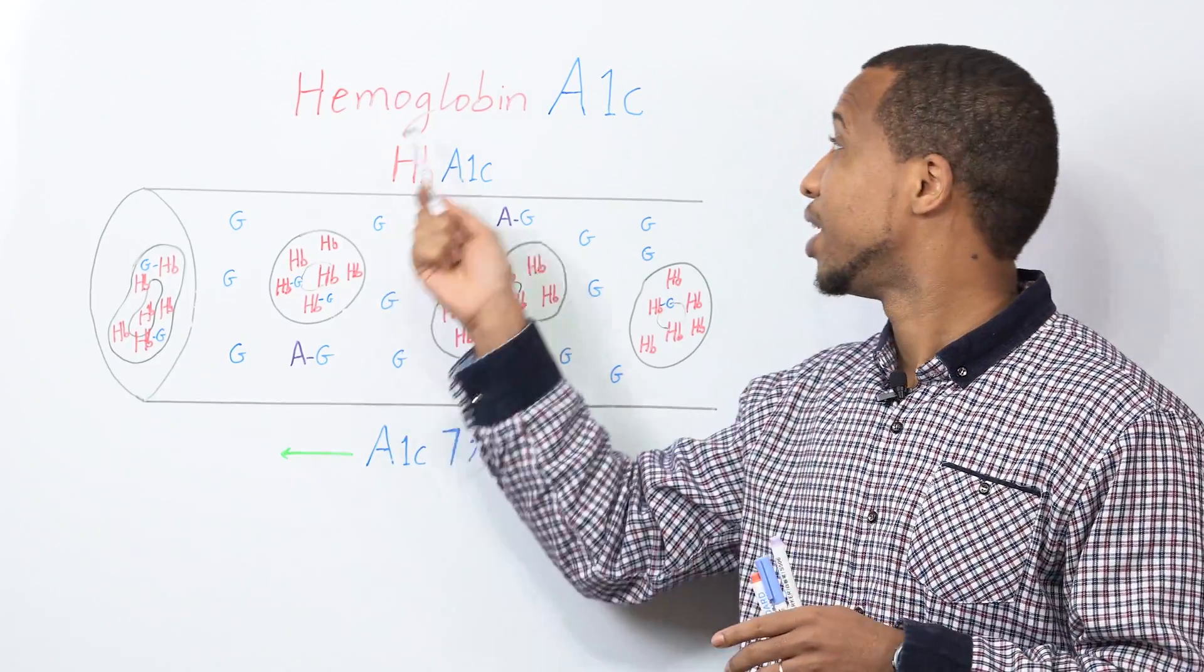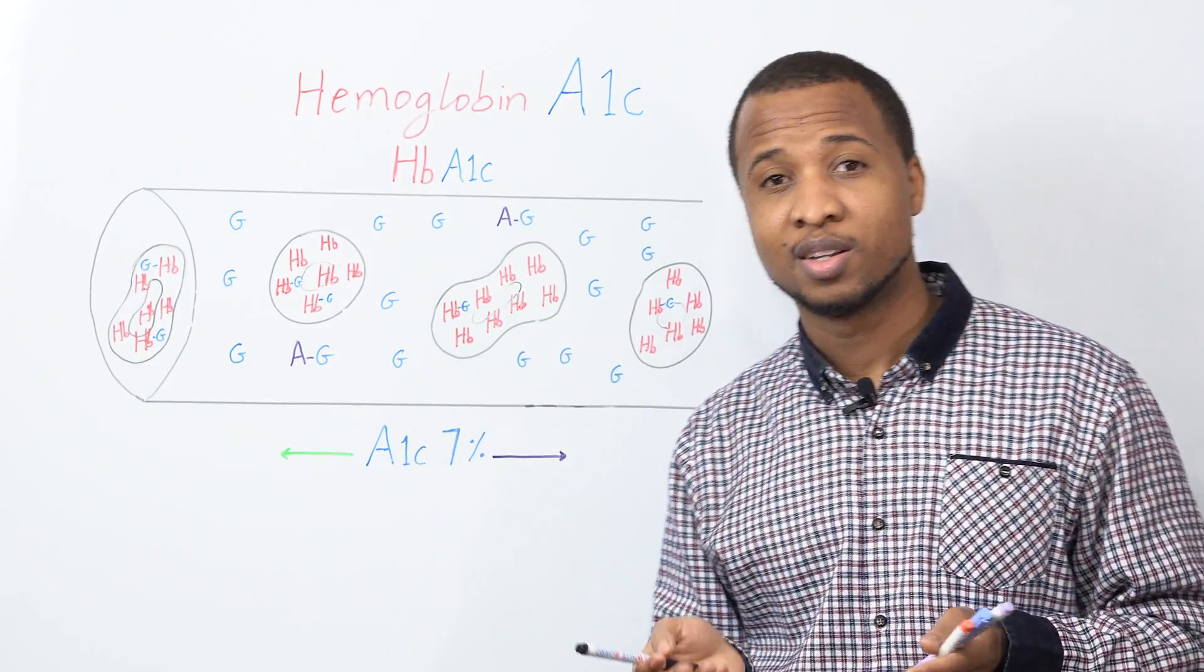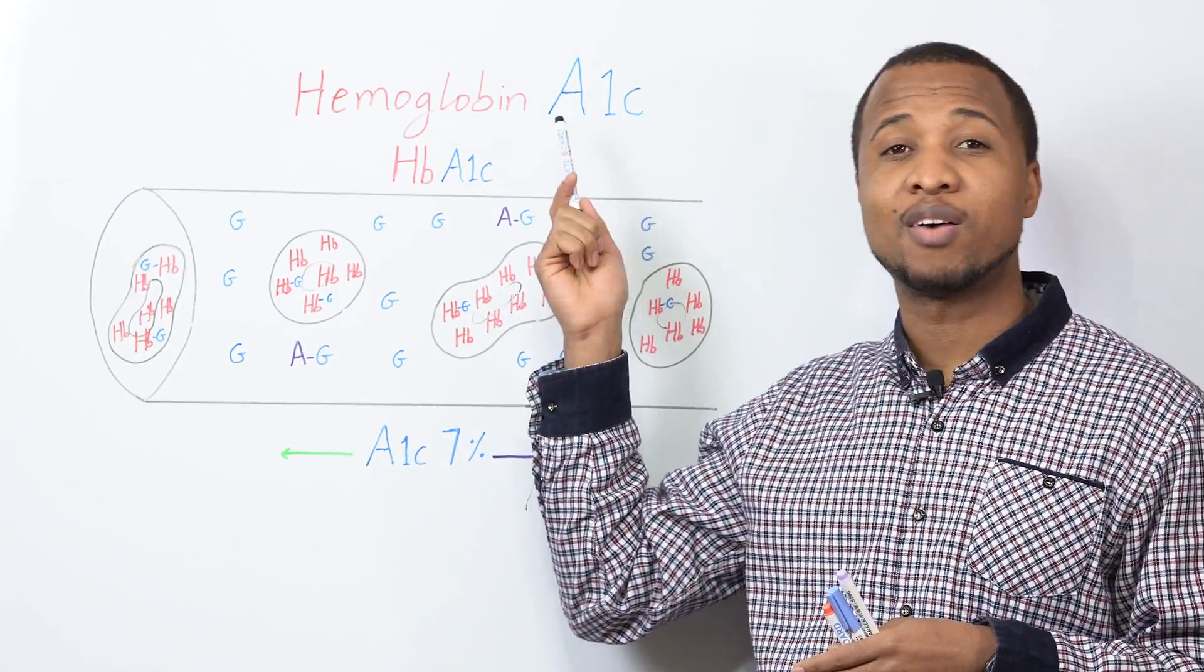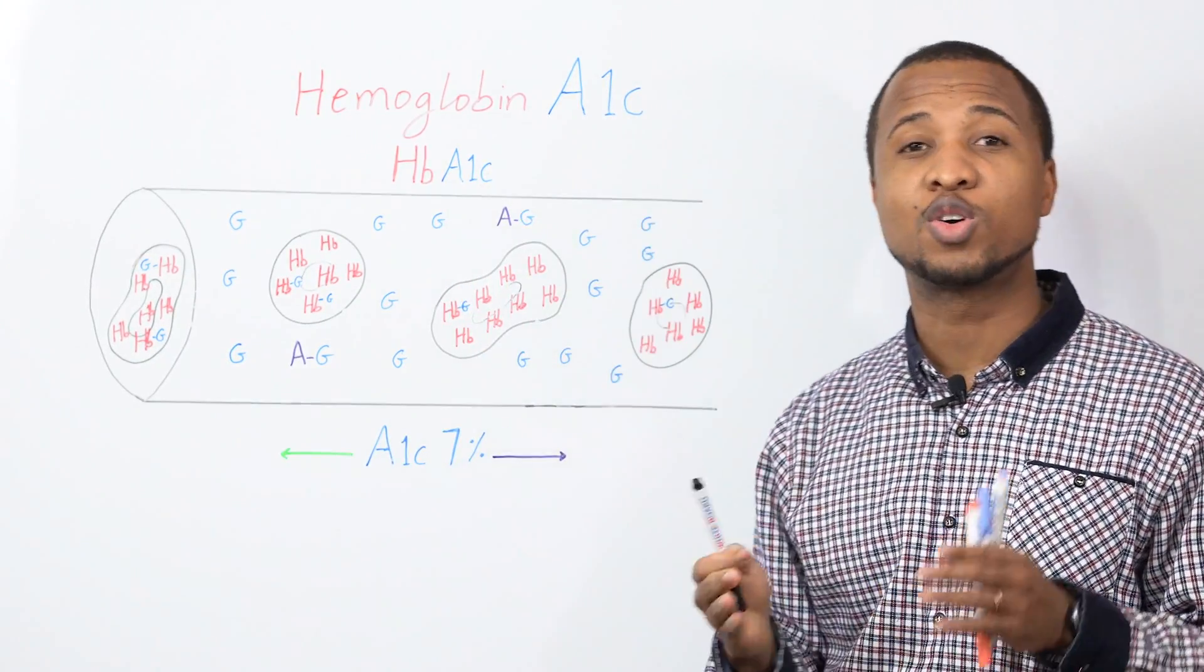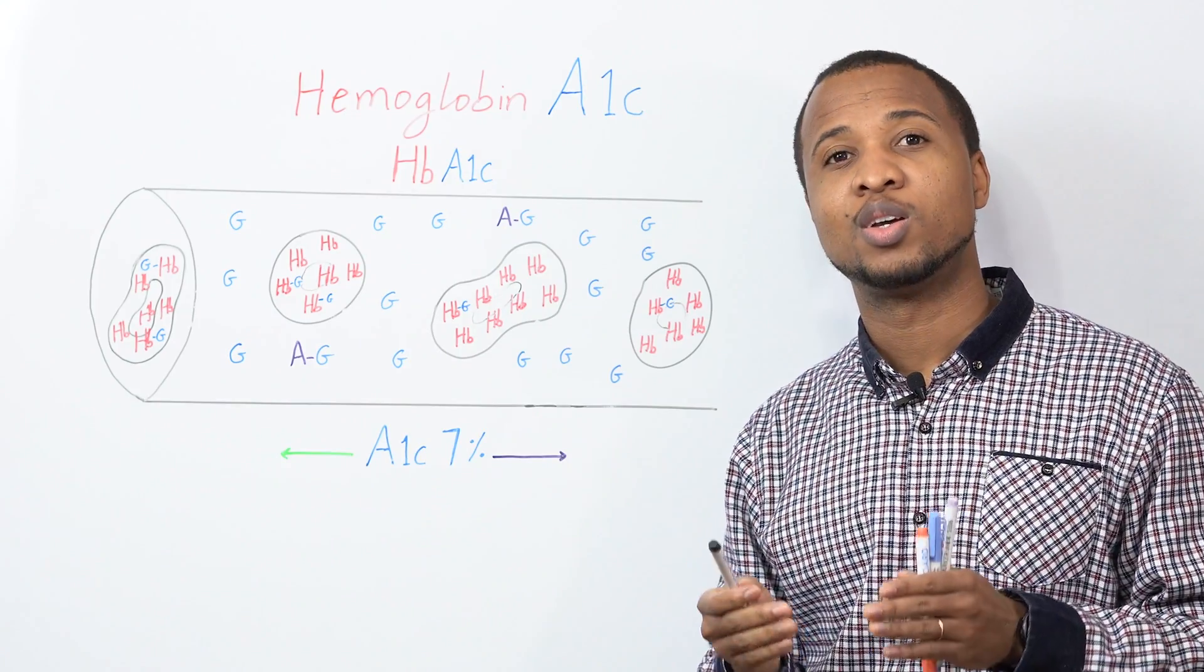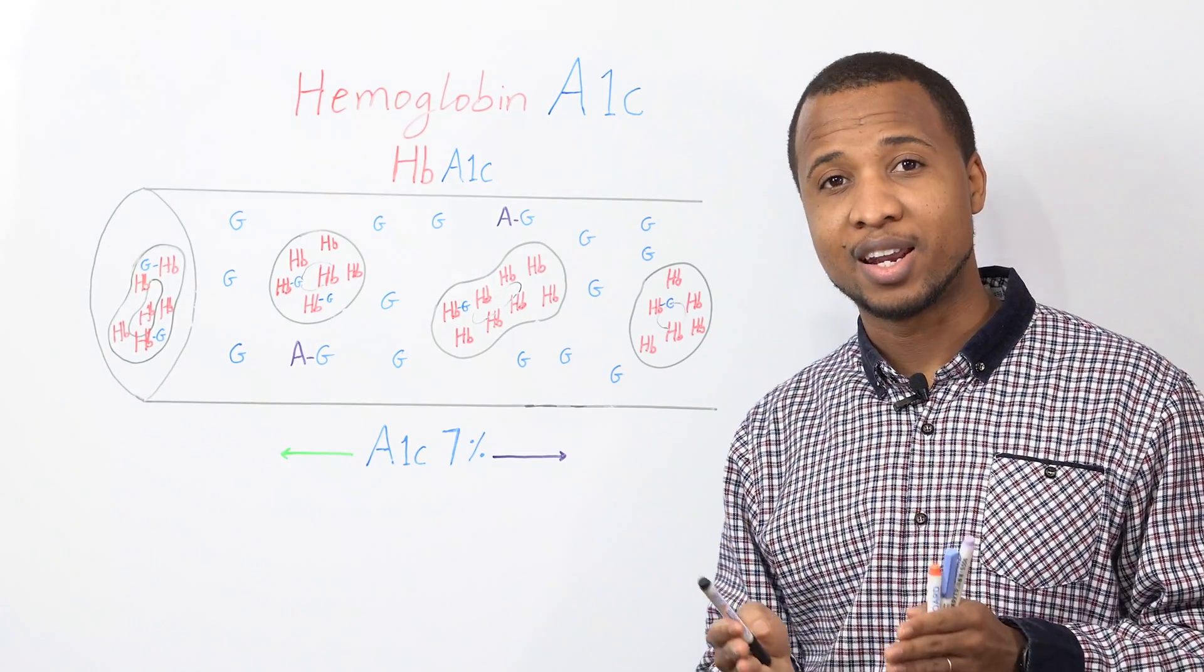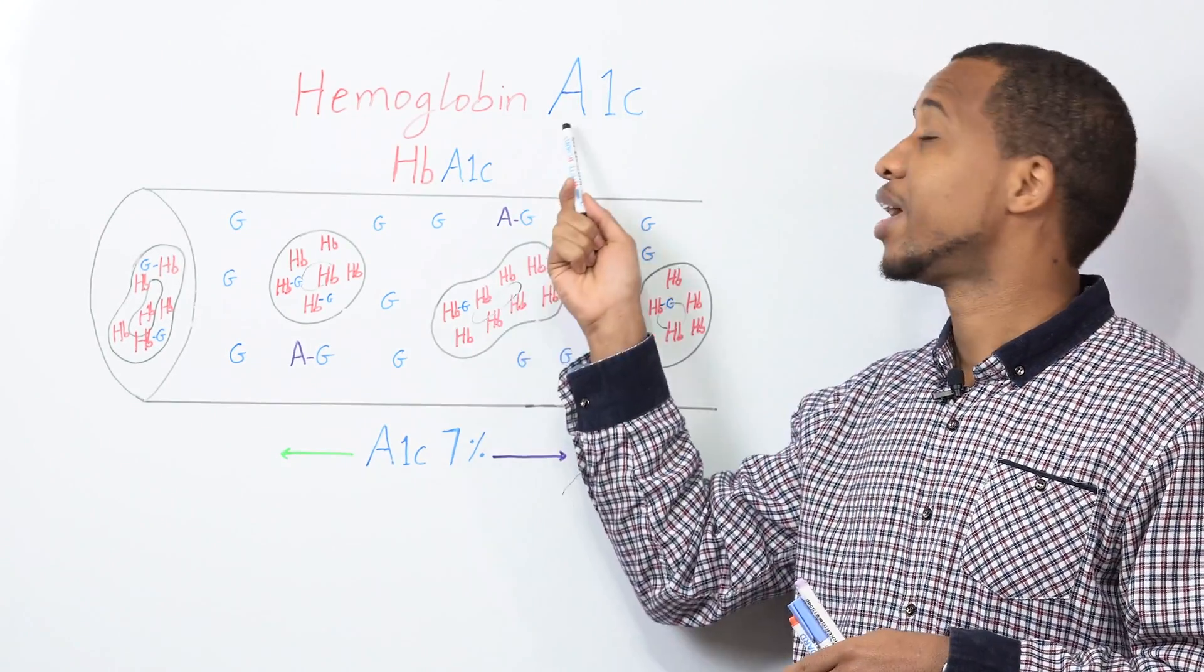Now, the A, hemoglobin A, the A stands for adult. And one, we have one, we have two, we have one C, one A, one B. But the ones with glucose attached to them, we call them glycated hemoglobin, or A1c.